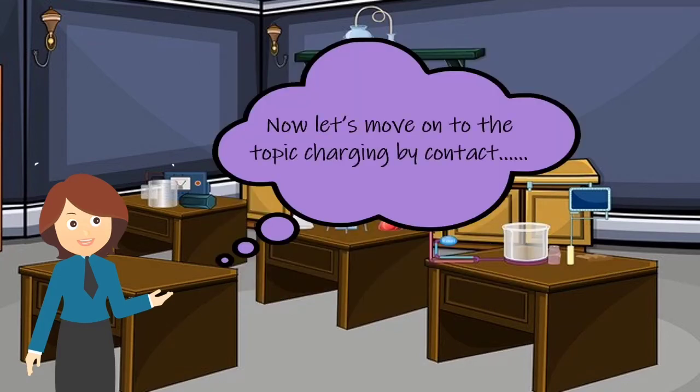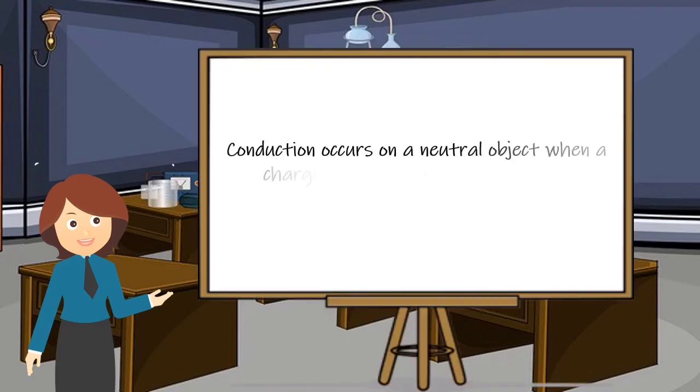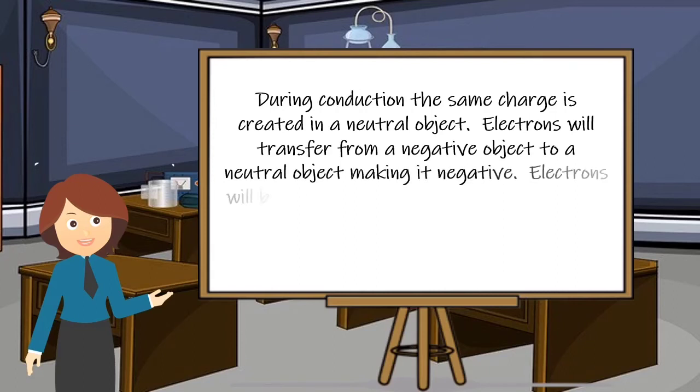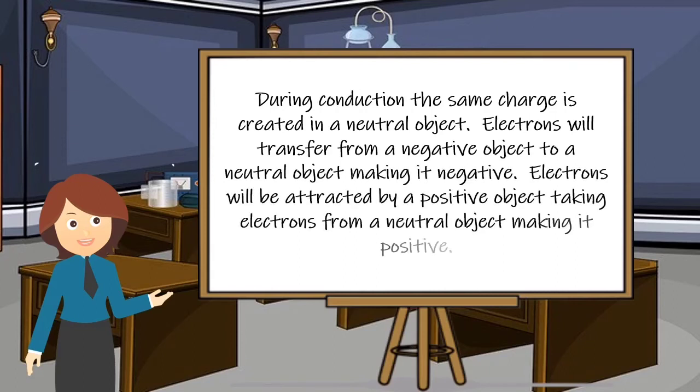Now let's move on to the topic of charging by contact. Conduction occurs on a neutral object when a charged object is in contact with it. During conduction, the same charge is created in the neutral object. Electrons will transfer from a negative object to a neutral object, making it negative. Electrons will be attracted by a positive object, taking electrons from a neutral object and making it positive.